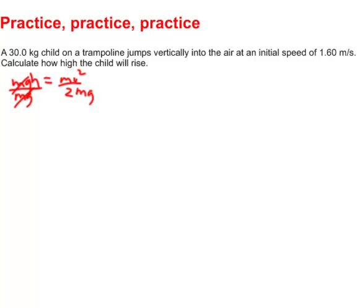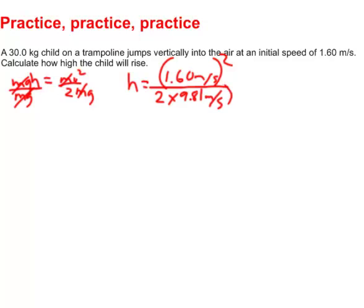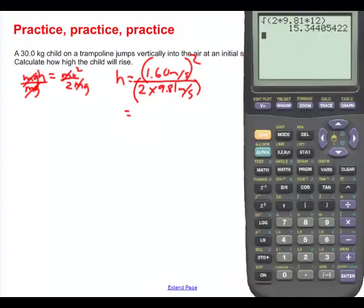The mass up top and the mass on the bottom cancel, which makes life really easy. All I've got to do to find the height is take the velocity squared — 1.60 meters per second squared — and divide that by 2 times gravity, which is 2 times 9.81 meters per second. Make sure you put that in brackets, otherwise you'll mess up your calculations. So: 1.60 squared divided by (2 times 9.81).